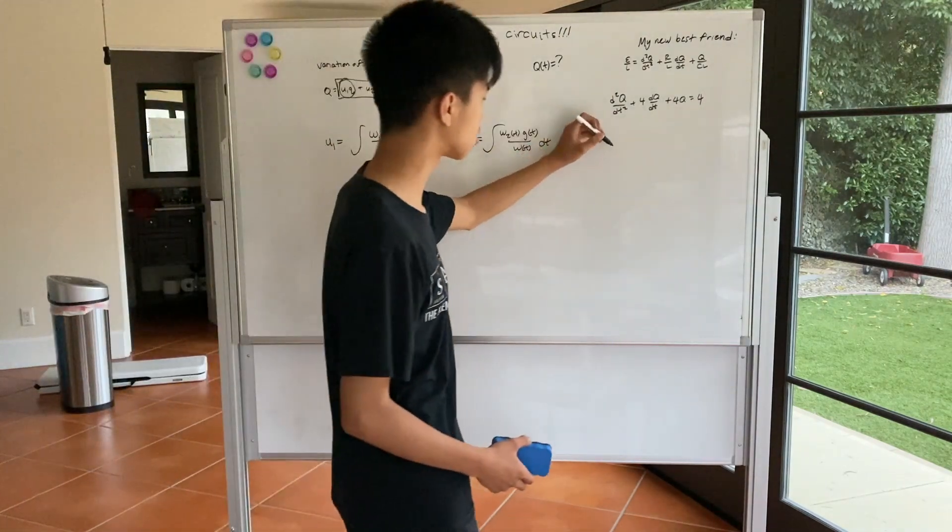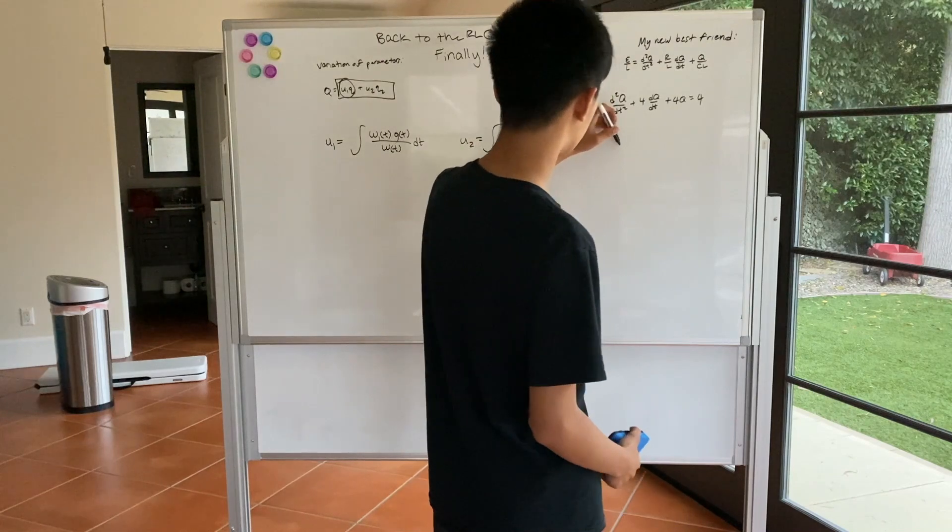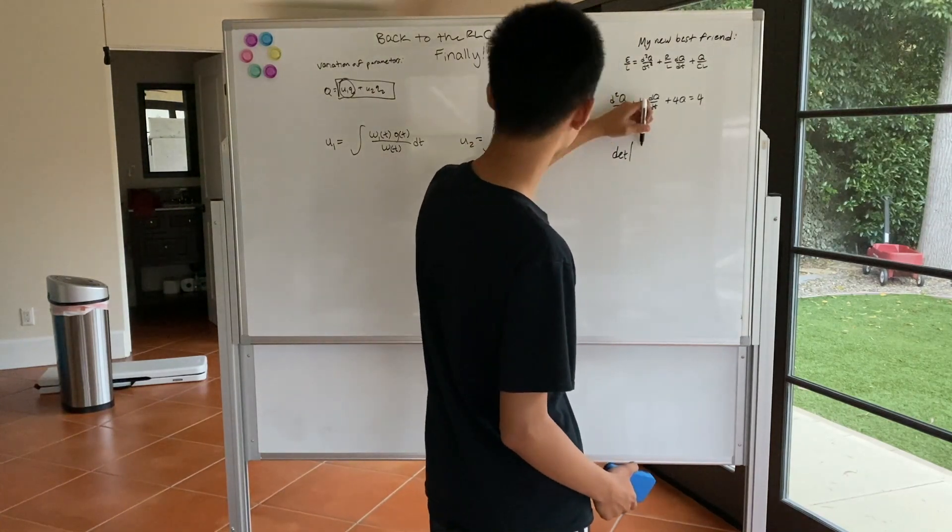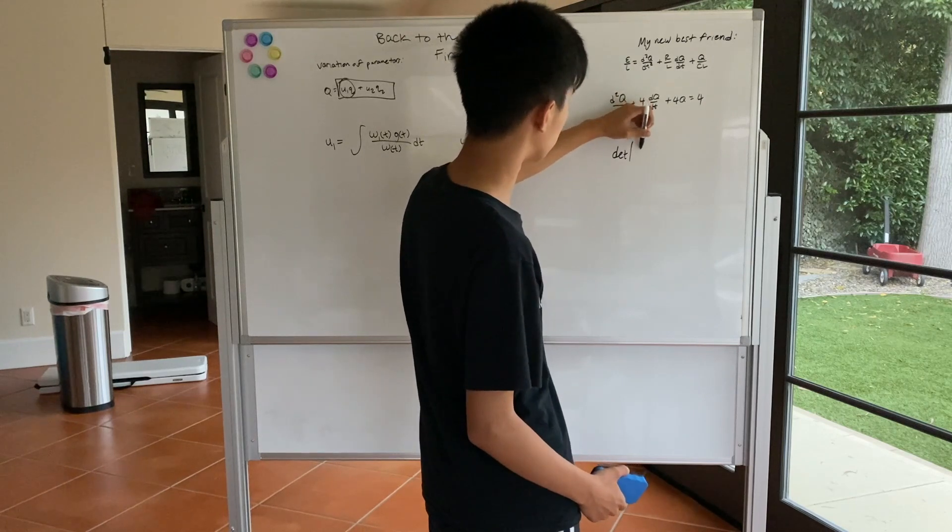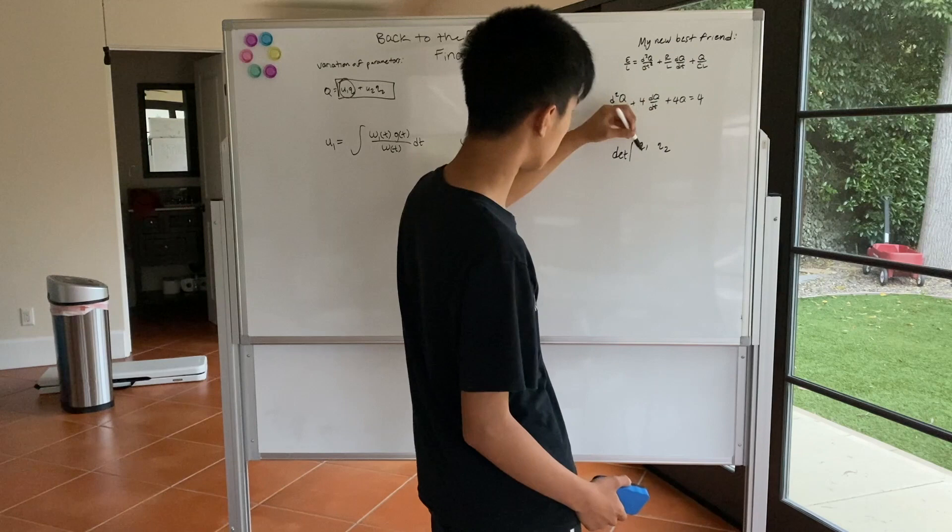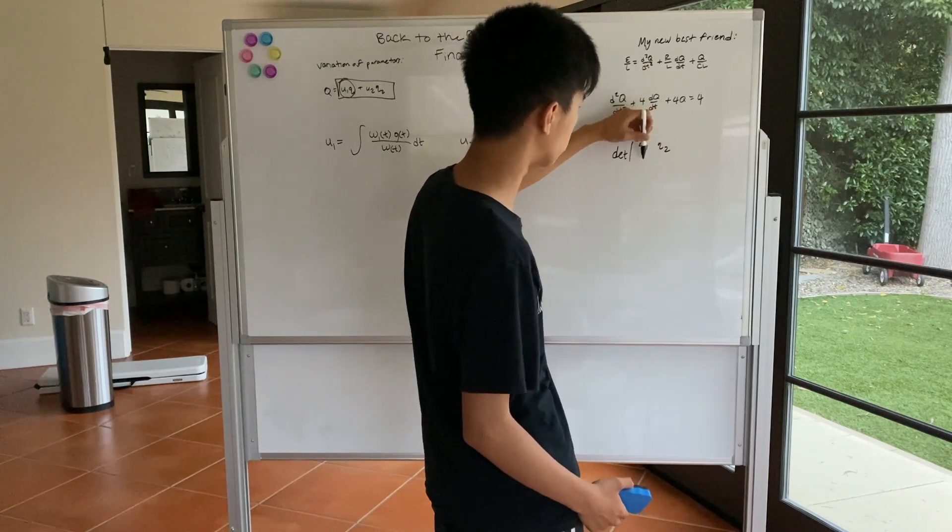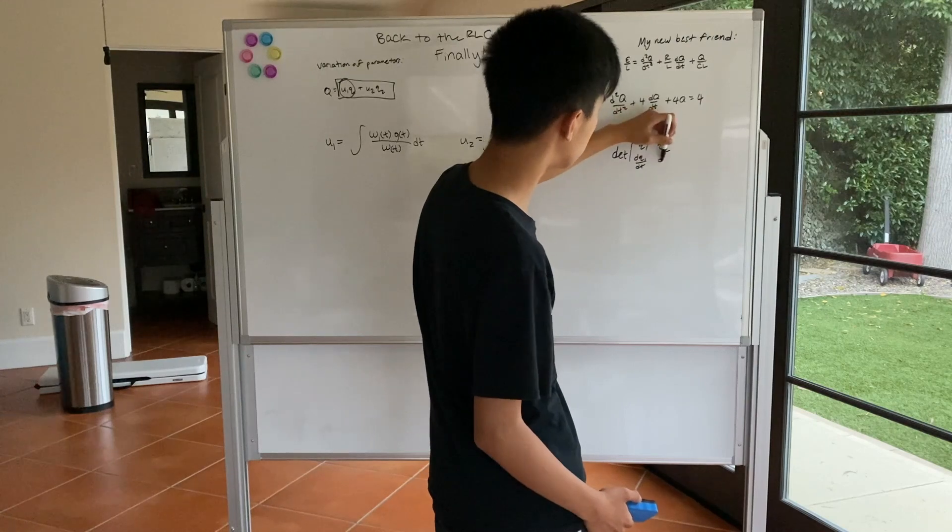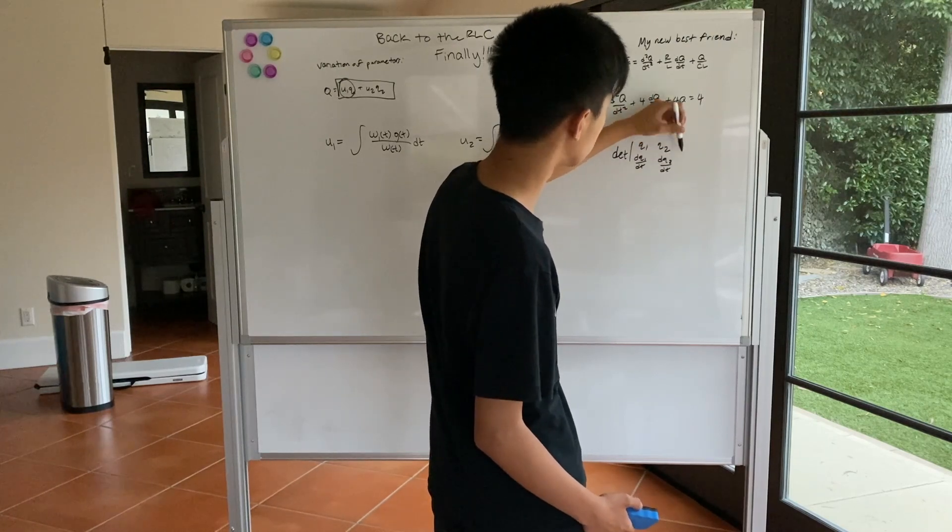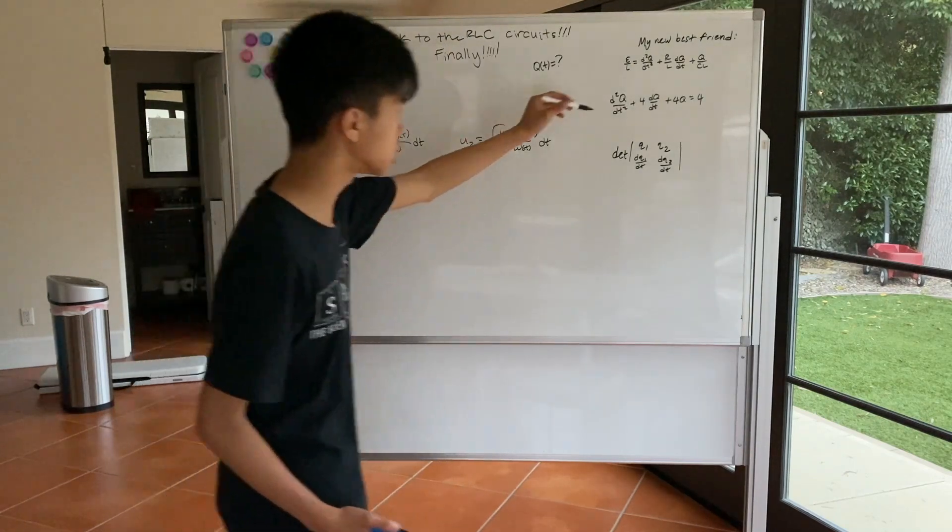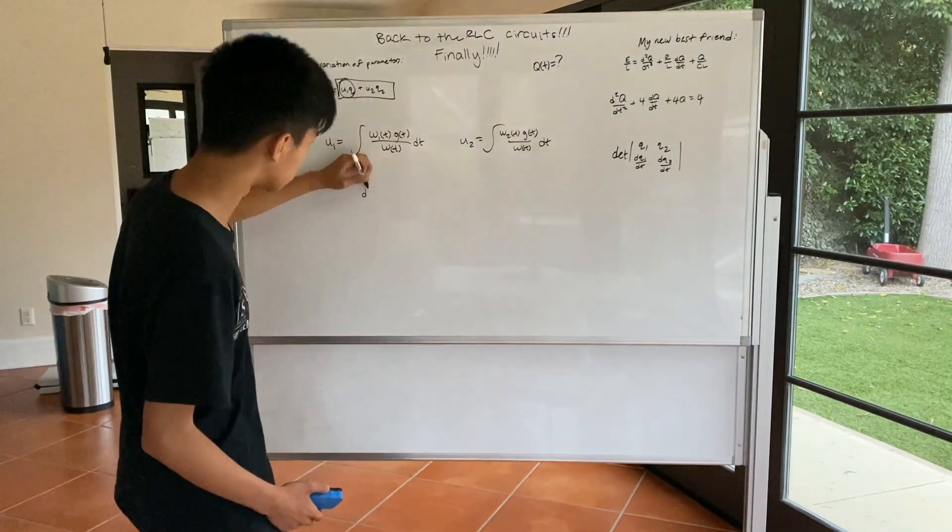a Wronskian is a square matrix, or the determinant of a square matrix, where we have solution 1, which we will call Q1, then we have Q2, then on the second entry row, we have dQ1 dt, and dQ2 dt. And what exactly is Q1 and Q2? Well, we have this equation here to guide us.